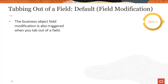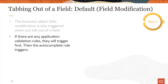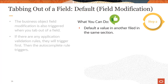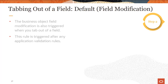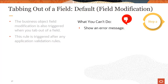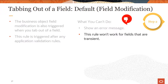The business object field modification rule is also triggered when you tab out of a field. This rule triggers after any application validation rules. It allows you to default a value in another field in the current section. You can display a warning message after the user tabs out of the field — once the user clicks OK to close the message, it doesn't appear again. You can't show an error message with this rule type. And similar to a field validation rule, this rule won't work for transient fields.